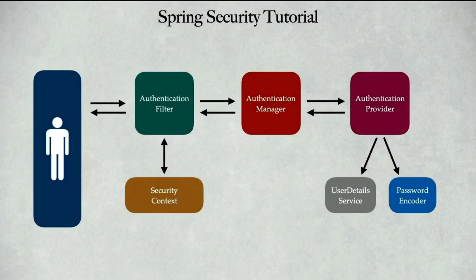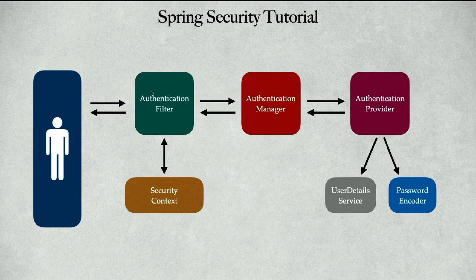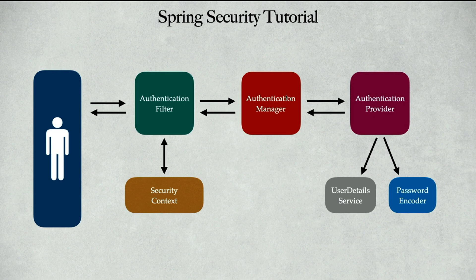When we add the Spring Security dependency to our Spring Boot application, a lot of things happen behind the scenes. When the user sends a request, it first goes to the authentication filter — which is not a single filter but a chain of filters. The job of the authentication filter is to authenticate the user. If the user is not authenticated, the request is sent to the authentication manager, which then sends it to the authentication provider.